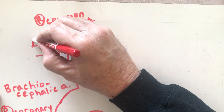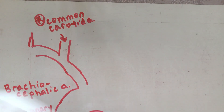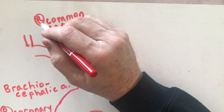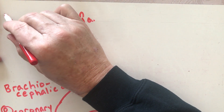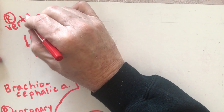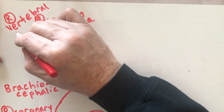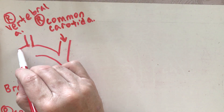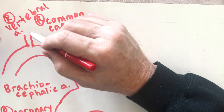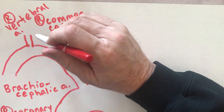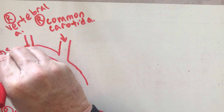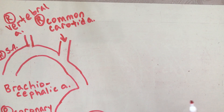Continuing from the brachiocephalic, we get the right vertebral artery. The vertebral arteries go through the transverse foramen of the cervical vertebrae — they go up and through those openings. Then from the brachiocephalic we also get the right subclavian artery.